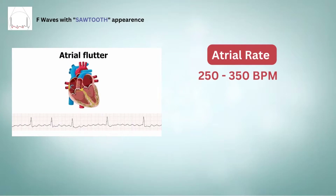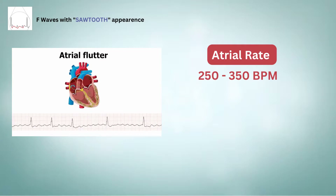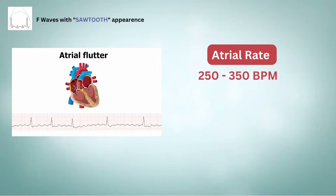Next, the atrial rate is 250 to 350 beats per minute. It can be faster in infants and children. In cases of massive dilation of the atria, the rate can exceed 200 BPM. Remember, quinidine can reduce the atrial rate.